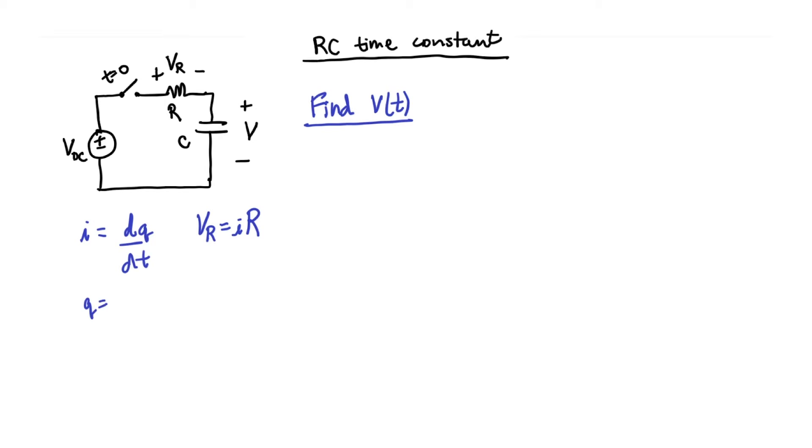We also know for a capacitor that charge is related to the capacitance times the voltage. So if I plug CV in for this equation, I can derive I is the time derivative of C times the voltage across the capacitor. Furthermore, I know that V is the source minus this voltage drop R. And if I plug in for I, then I know that it's VDC minus, then I've got R, C, which are both constants times dV/dt.